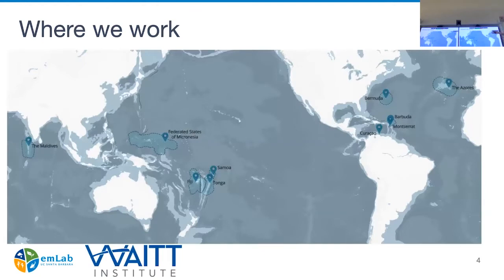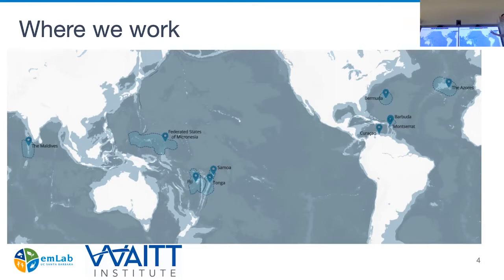My focus today is going to be on the marine spatial planning side of things. This map gives you an idea of the broad scale of the work globally. We started out working in the Caribbean — that's where the Waite Institute started — and I cut my teeth on conservation planning in Montserrat, a tiny Caribbean island. We're now doing much larger scale work, with sites including the Federated States of Micronesia in the Pacific, Bermuda, and sites scattered around the Pacific and Atlantic Ocean.